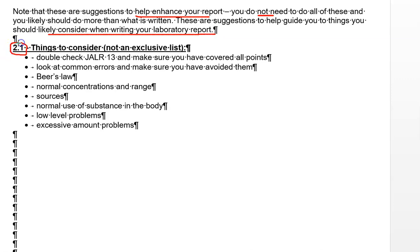This video is for 2.1, covering all of the glucose, cholesterol, and protein measurement labs. There are separate videos for the other lab reports: 8.4 for the acid-base balance ones and 1.3 for the homeostasis negative feedback ones. This is not an exclusive list — it's only some of the things you might want to look at. Double-check JLR 13, the checklist, so as you get ready to turn in your report, make sure you've covered all of the points in that one.